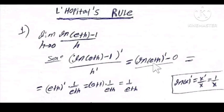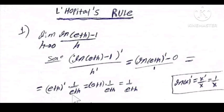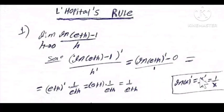Therefore, the derivative of ln(e+h): by the chain rule, this equals the derivative of the inner part (e+h) times 1 over the inner part. This rule for ln(x) means: the derivative of the inner part over the inner part itself, without derivatives.